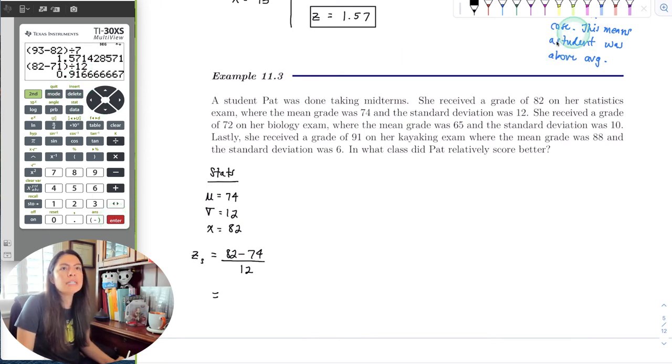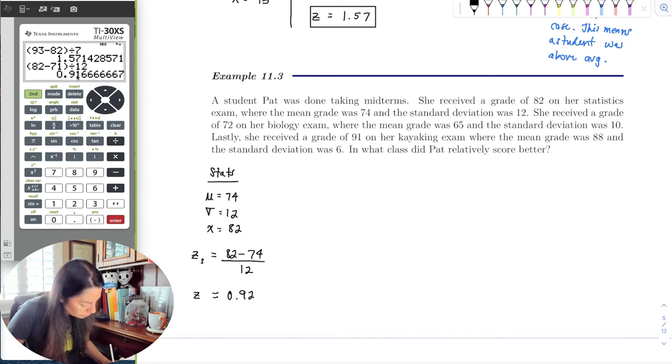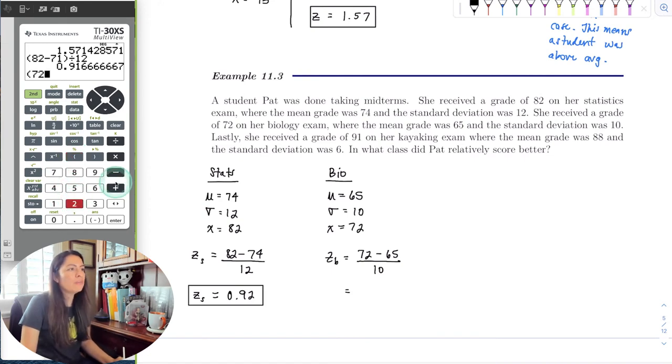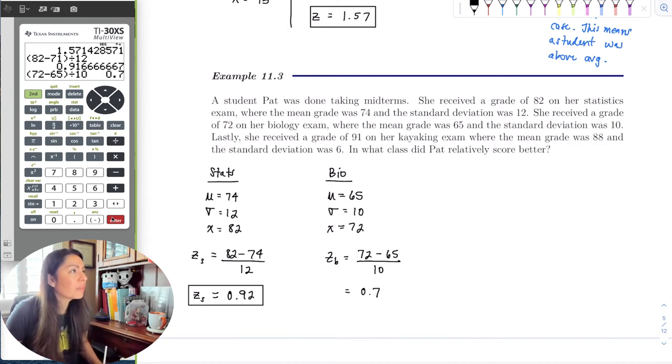Once again, we want to round to two decimal places as mentioned before. Notice six is the test digit, so we're going to have 0.92. It is positive though, so we assume she did do above average. Let's see for her bio exam. The bio exam's mean was 65, the standard deviation was 10, and her score was 72. So the z-score for the bio exam was equal to 72 minus the mean 65, all over 10. Once again, I'm just going to go to my calculator and not think about it. I'm way too busy to do arithmetic. So we have 0.7 exactly.